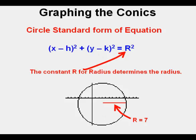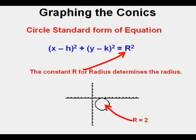The constant r gives the radius of a circle. In this circle, the value of r is 7, so the value of r squared is the square of 7, or 49. For this smaller circle, the value of r, or radius, is 2, so the value of r squared is 4.